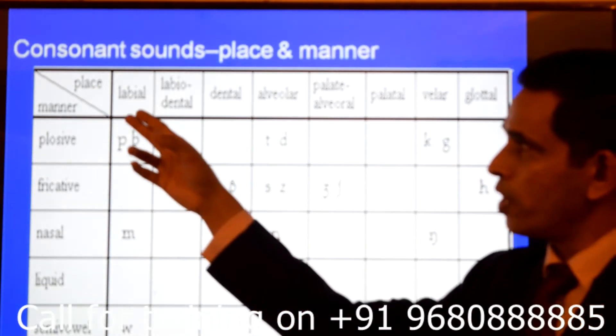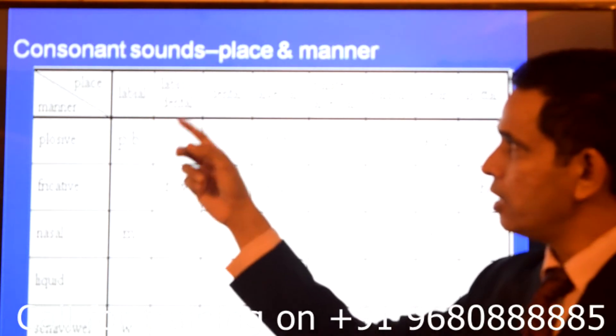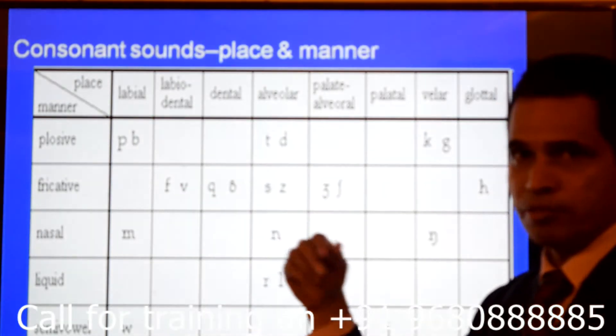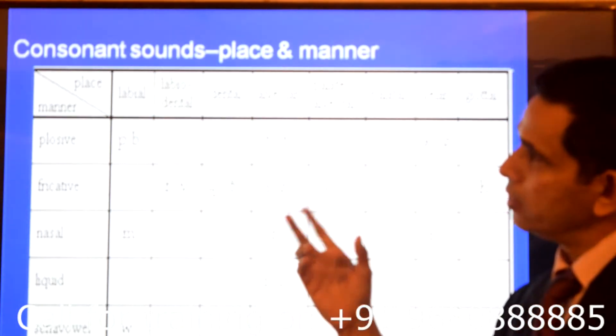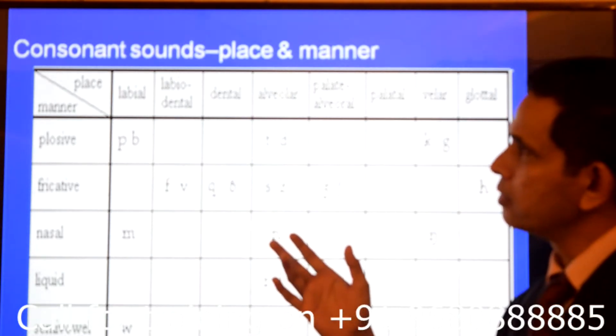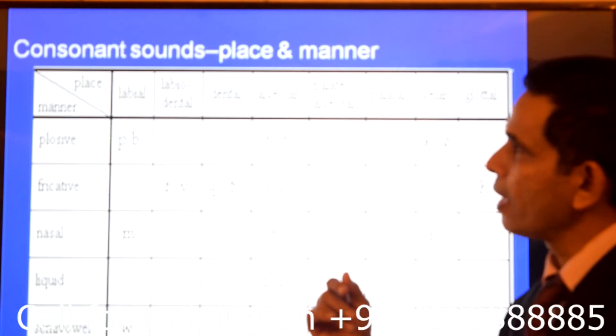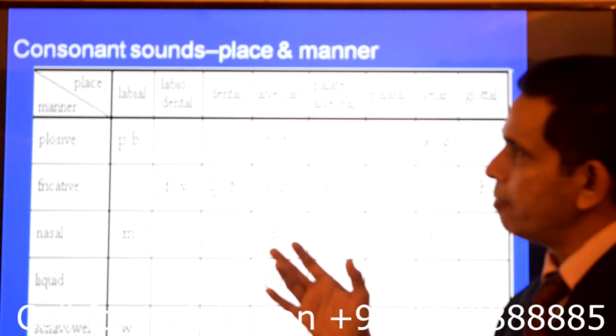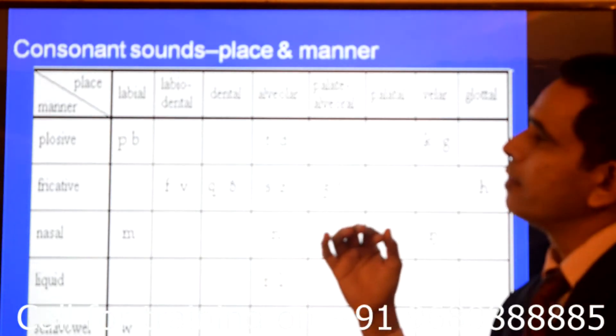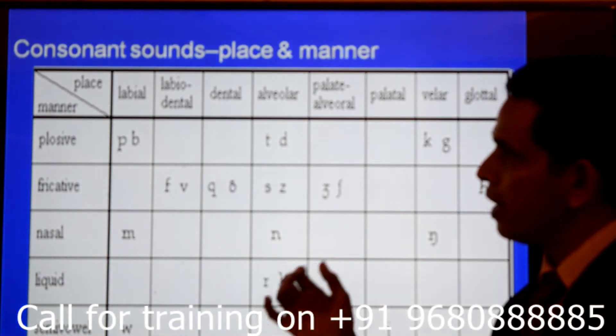And the place where it is produced is labial, labia dental. Labia dental means between the tongue and labia dental means between lower lip and upper teeth.